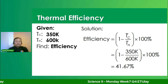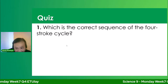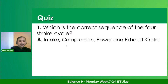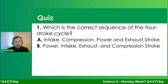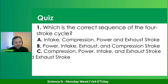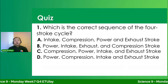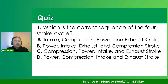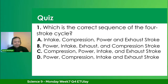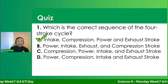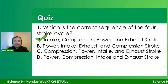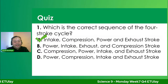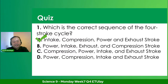That's the end of our lesson. Let's have a quick quiz — let's apply what we've learned today. Number one: which is the correct sequence of the four-stroke cycle? A, intake, compression, power, and exhaust; B, power, intake, exhaust, and compression; C, compression, power, intake, and exhaust; or D, power, compression, intake, and exhaust. Five seconds. The answer is letter A — intake, compression, power, and exhaust stroke. That is correct — intake, compression, power, and exhaust.